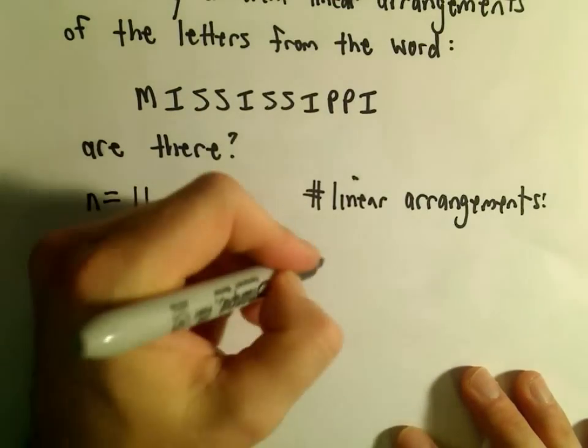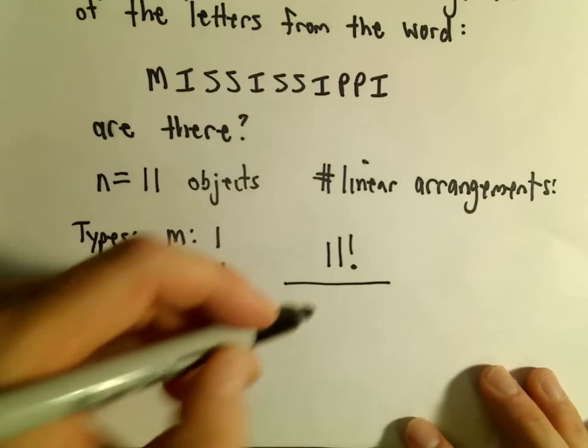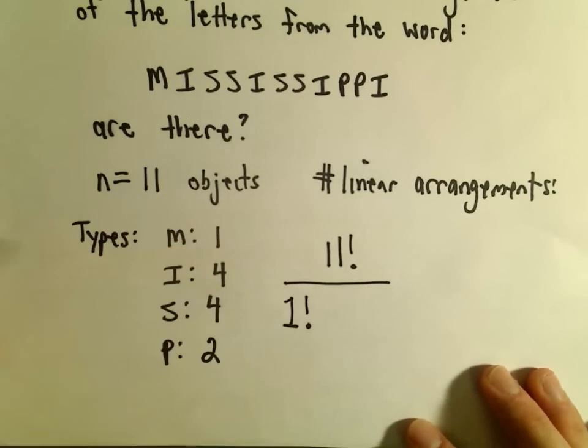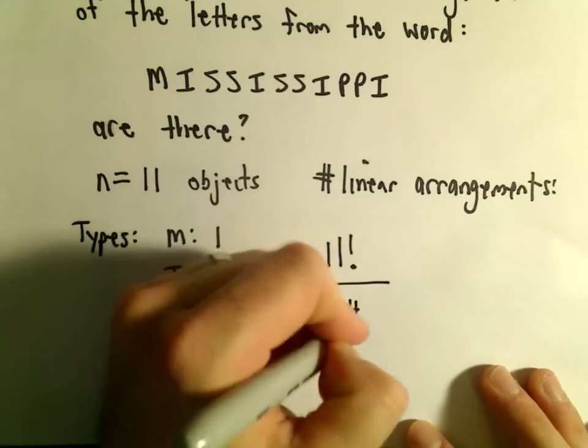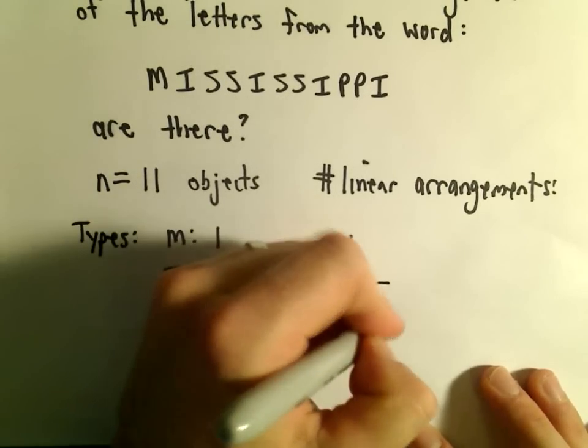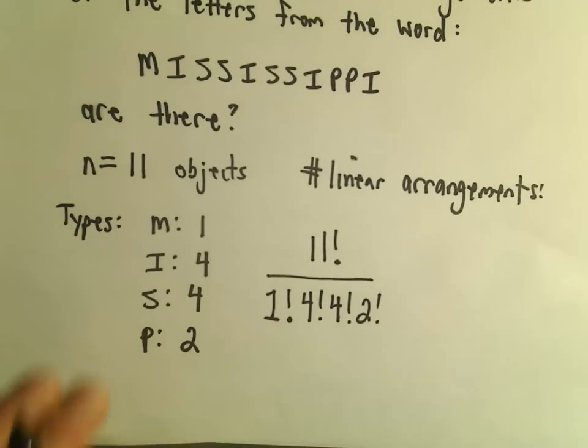So the number of linear arrangements in this case: we take the total number which is 11 factorial, and then we just take our different types and take factorials of each of those. So 1 factorial, 4 factorial, 4 factorial, 2 factorial. Now this is what we get to simplify down here.